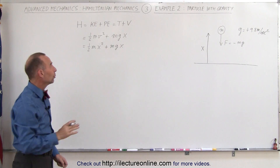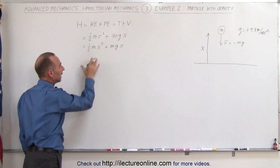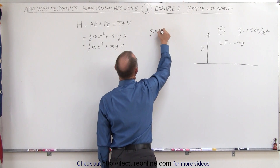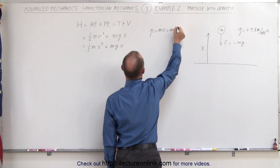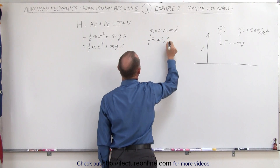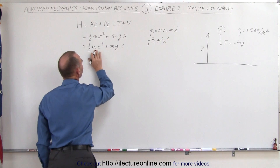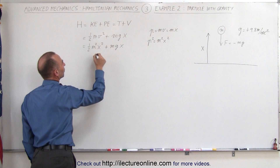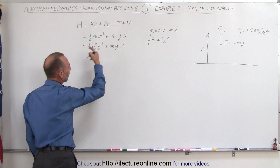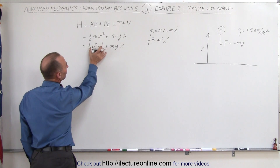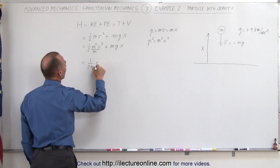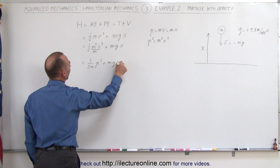Also, we know that for the Hamiltonian, we like to take the kinetic energy portion and write it as a function of momentum. We know that momentum is equal to m times v, which is equal to m times x dot, which means that momentum squared is equal to m squared times x dot squared. We simply multiply the numerator by m and then divide by m, so that we can replace this by p. We can write this equal to one over two m times the momentum squared plus mg times x.